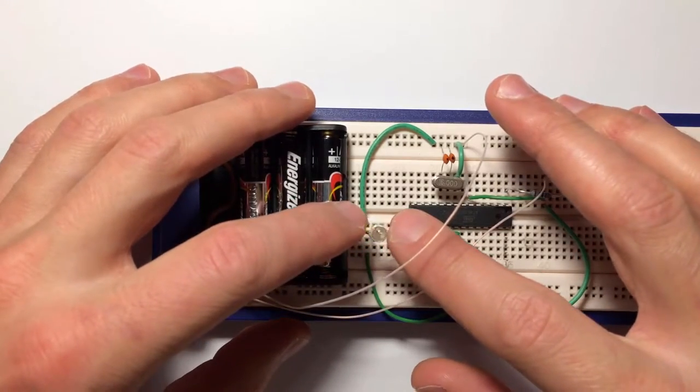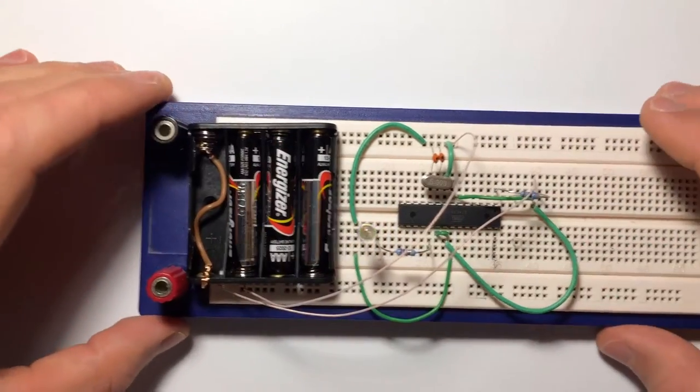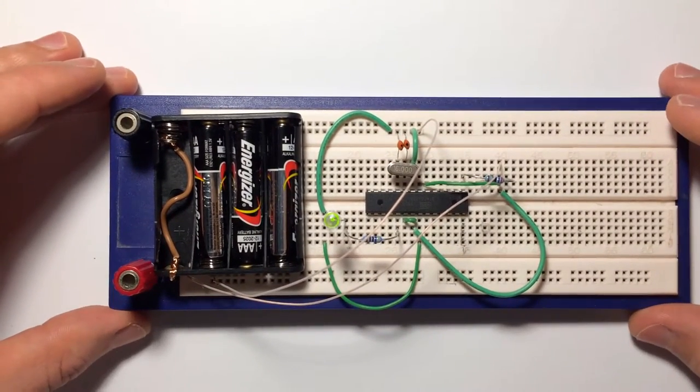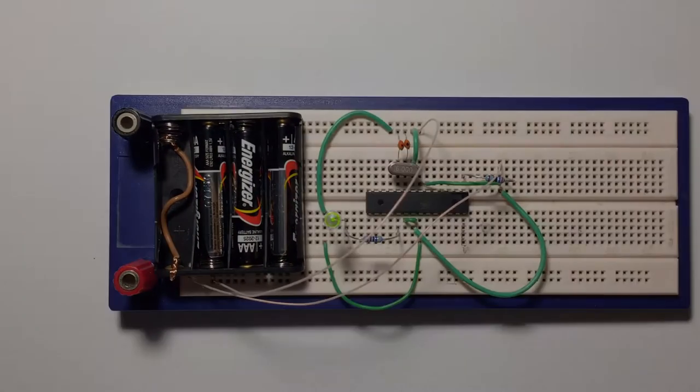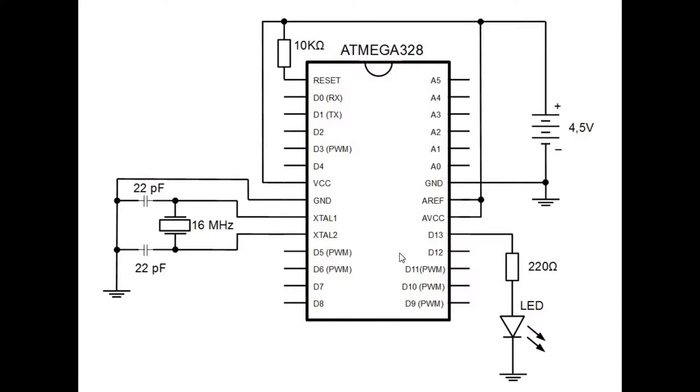Now as promised I will have one more look at the schematics and say a few more words about it. So here is our circuit one more time. I guess you understand why we need this LED light here and this resistor, but why do we need this other resistor, these capacitors, and these extra connections?